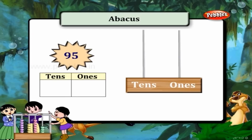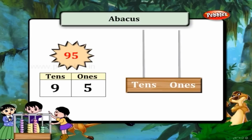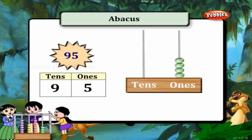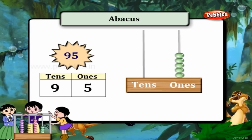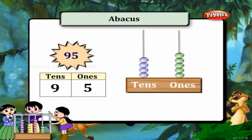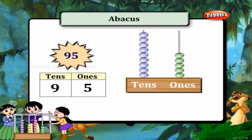95 is 5 ones and 9 tens. So draw 5 beads on the ones line and 9 beads on the tens line.